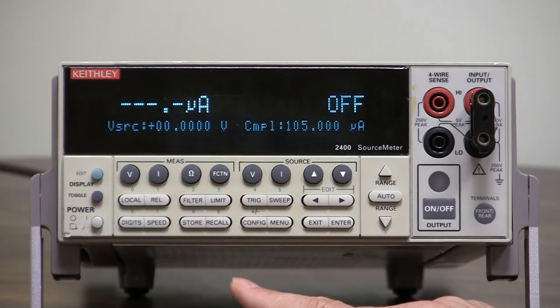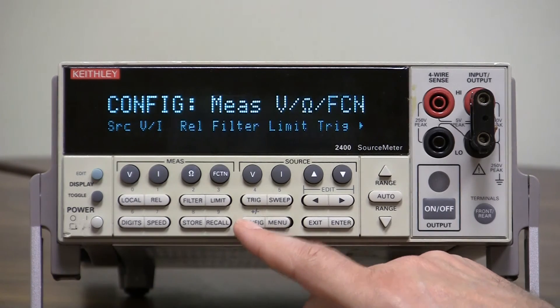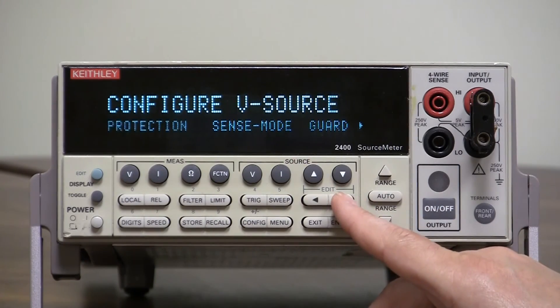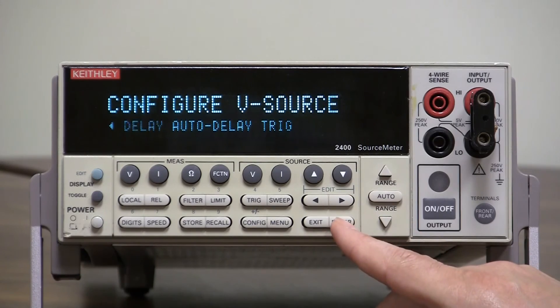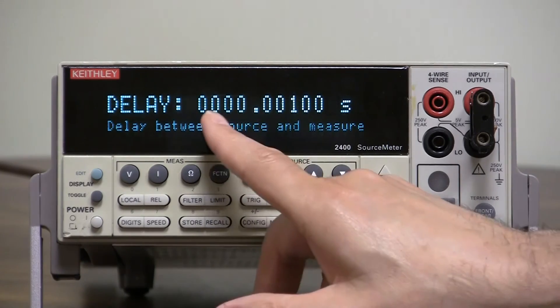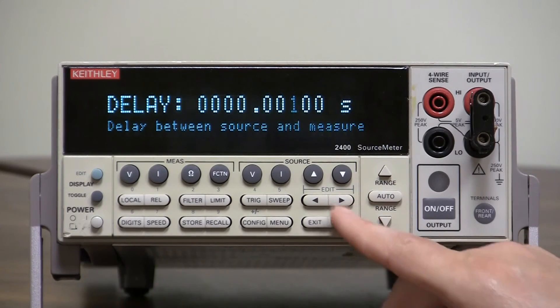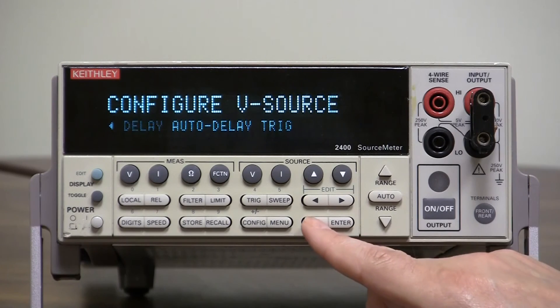Then we need to turn off the delays. So we have two delays. We have a source delay. So we go to configure V-source, go all the way over to the right to delay. Hit enter. See there is a one millisecond delay in there. So we will set that to zero, enter, exit.